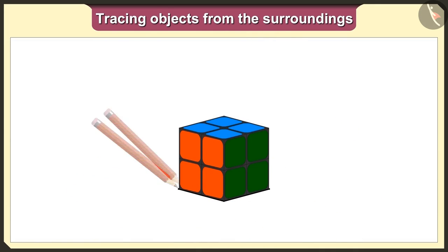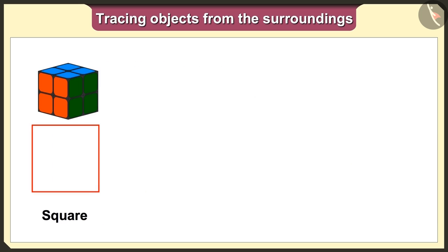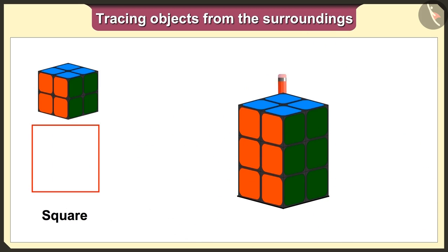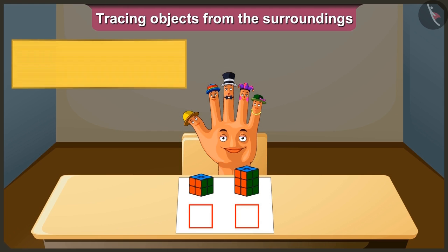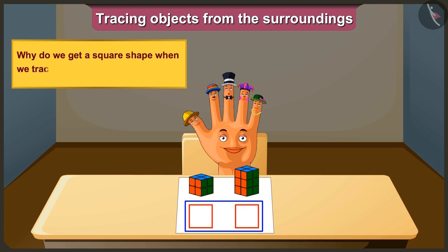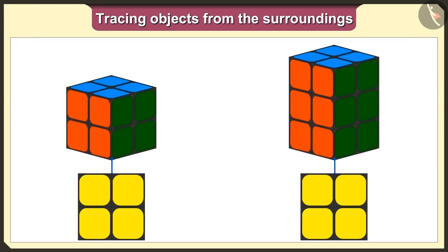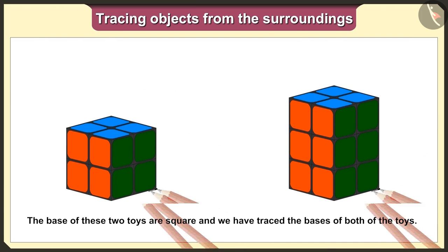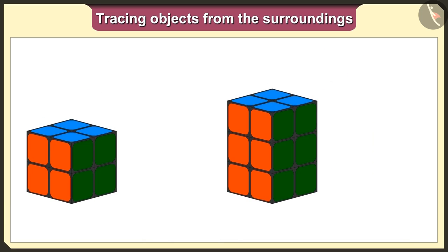If we keep this cube toy on paper and trace it, then we will get a square shape like this. And if we keep this cuboid toy on paper and trace it, then also we will get a square shape. But why do we get a square shape when we trace both these toys? Because the base of these two toys is square, and we have traced both toys with their base.